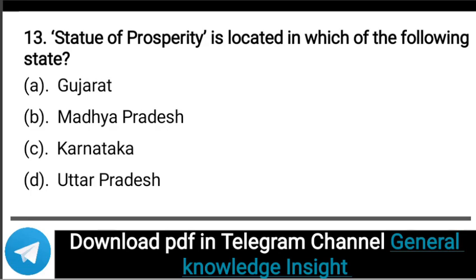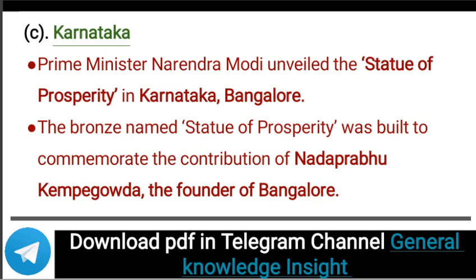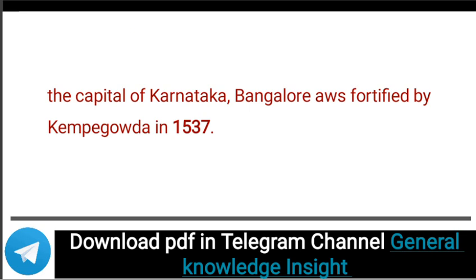Next question: The Statue of Prosperity is located in which of the following states? The correct answer is option C, that is Karnataka. Prime Minister Narendra Modi unveiled the Statue of Prosperity in Bangalore, Karnataka — a bronze statue. The Statue of Prosperity was built to commemorate the contributions of Nadaprabhu Kempegowda, the founder of Bangalore. The capital of Karnataka, Bangalore, was fortified by Kempegowda in 1537.